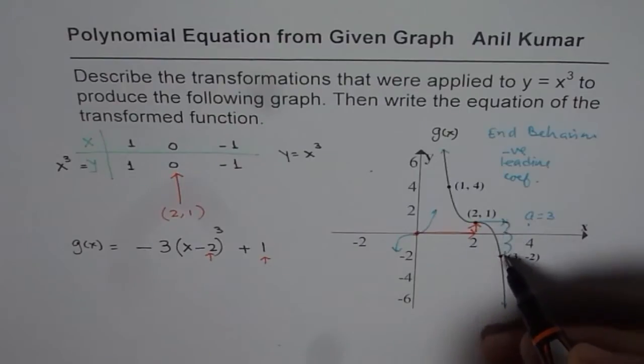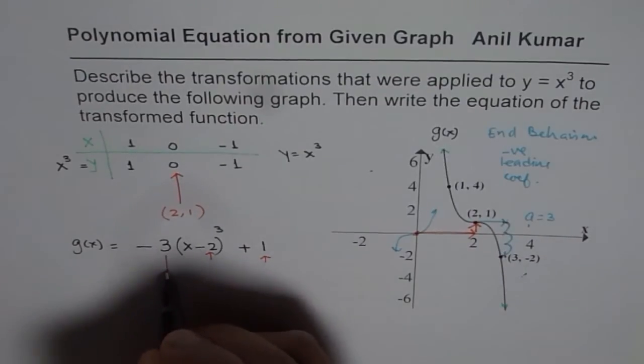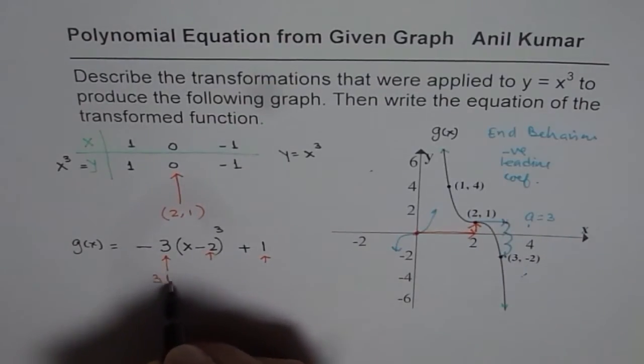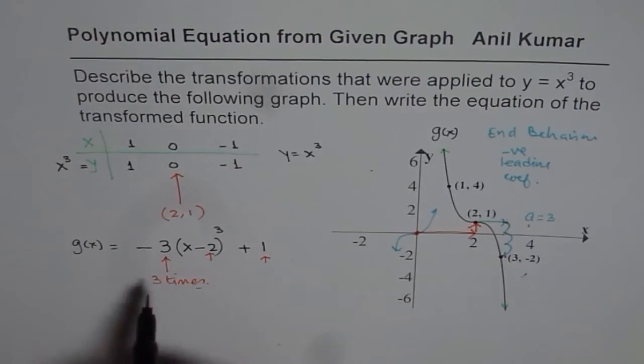And that lower value, we expected one, but we have three, not one, which is three times. So that means there is a vertical stretch by a factor of 3. And that gives you the number 3 there.